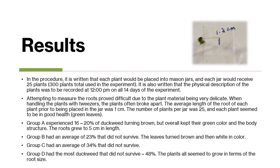Group A experienced 16 to 20% of duckweed turning brown, but overall kept their green color and body structure. The roots grew to 5 centimeters in length. Group B had an average of 23% that did not survive — the leaves turned brown and then white in color. Group C had an average of 34% that did not survive, and Group D had the most duckweed that did not survive at 48%. The plants all seemed to grow in terms of root size.